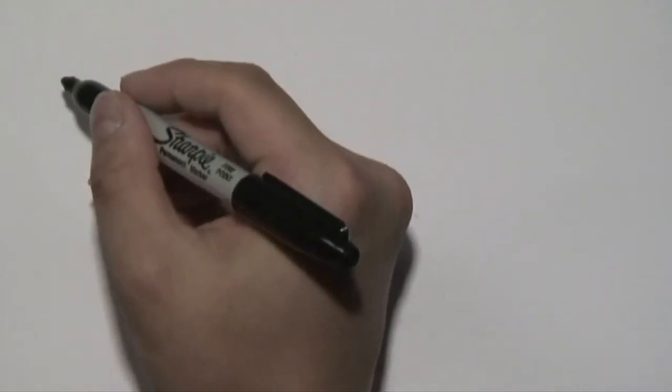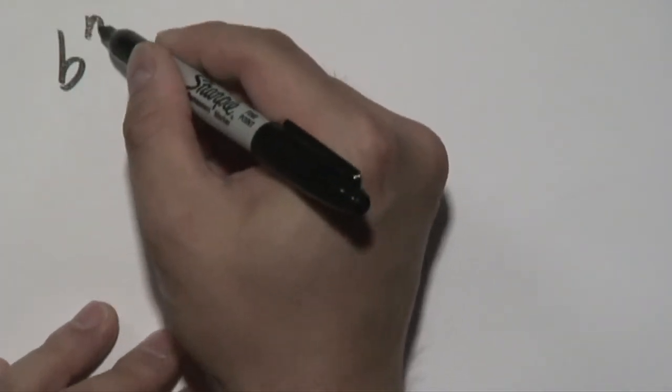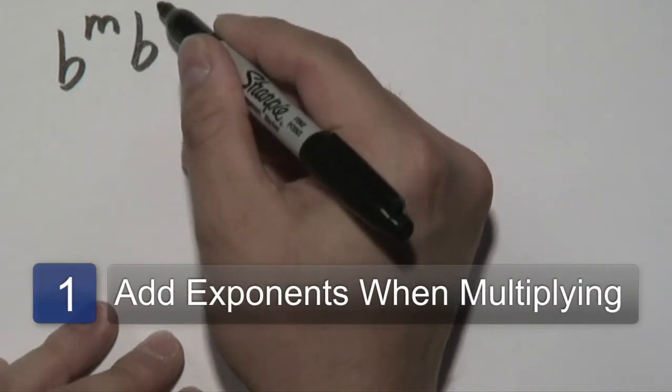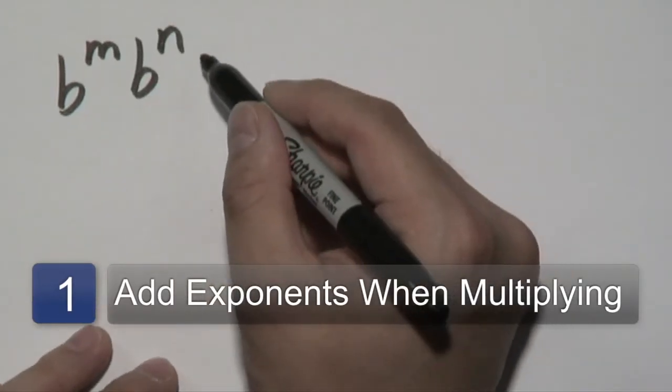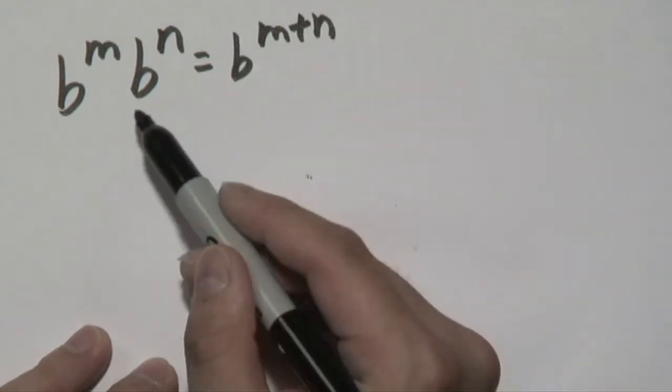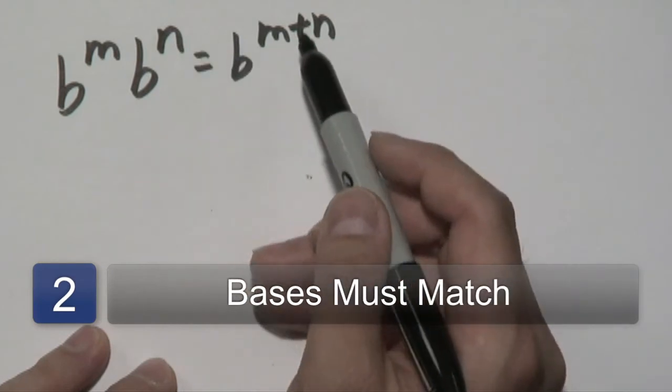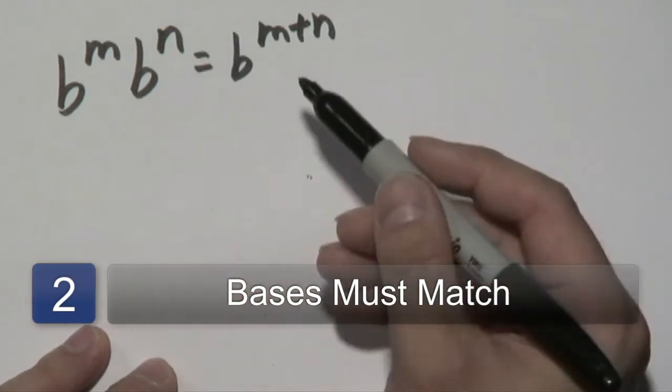Now one of the most important rules to think about when it comes to simplifying exponents is this particular property here, where if you have a base raised to a power times the same base raised to another power, you will add those exponents together. Now one thing to keep in mind, of course, is that the bases have to match. If they don't match, then you can't use this property. The bases have to be equal.